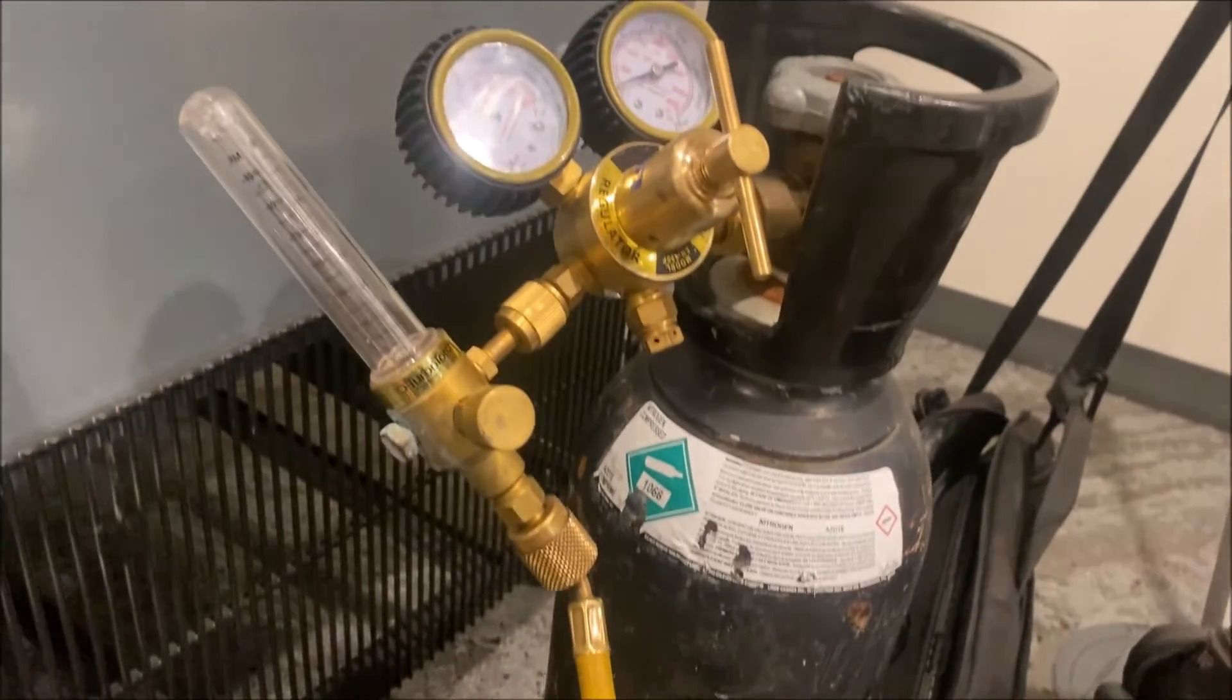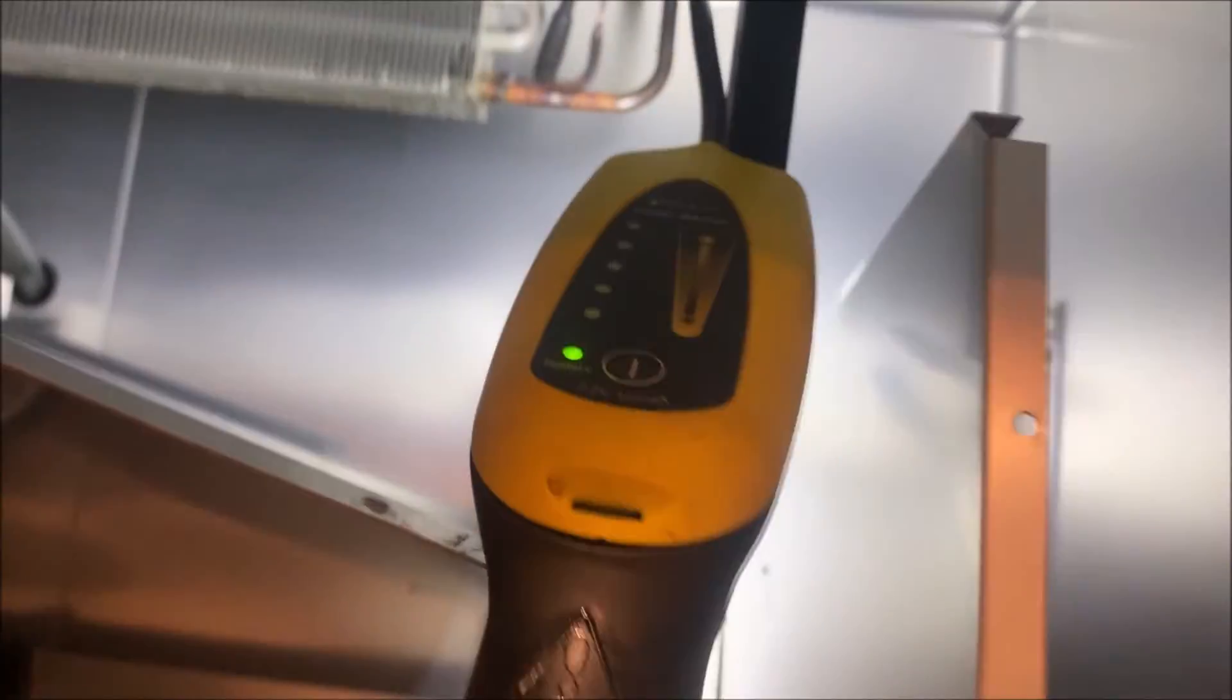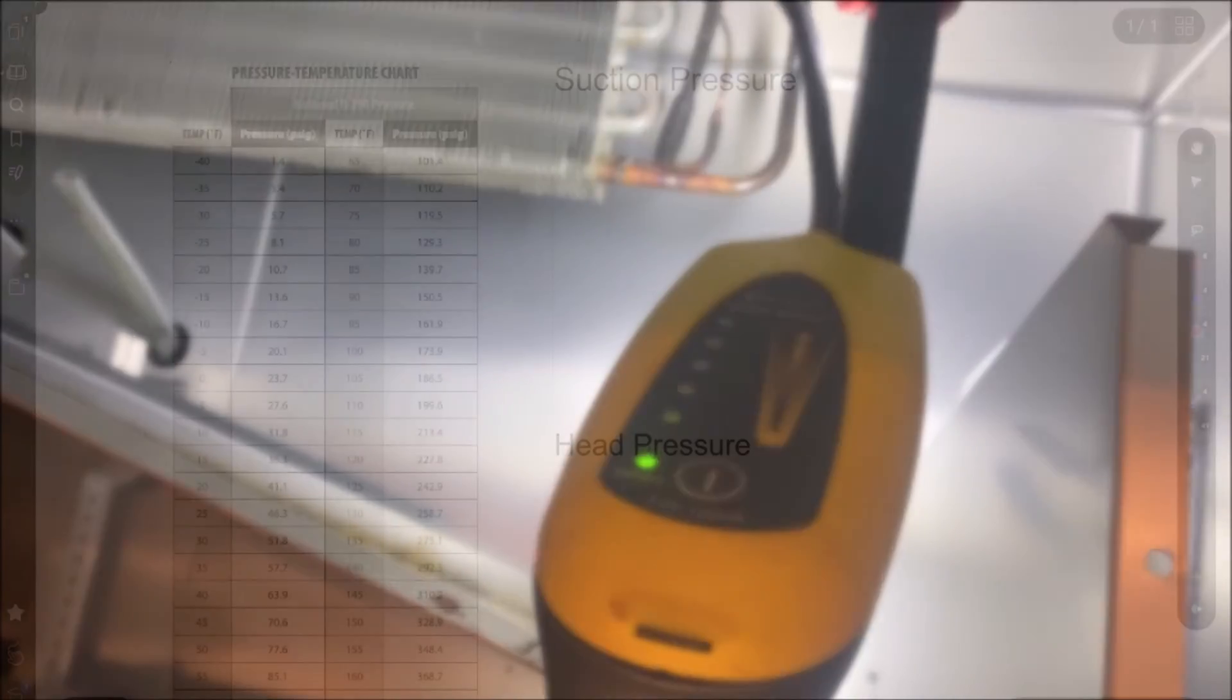We should always be flowing with nitrogen but especially when we're brazing near the cap tube. I have everything brazed up and look at that, leak is fixed.